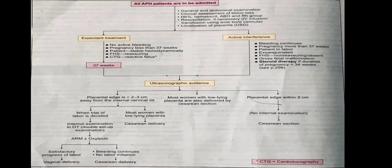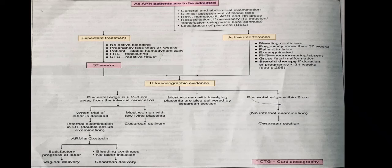Active interference is indicated when the criteria for expectant management are not met: bleeding is still continuing, pregnancy is already more than 37 weeks, labor has started, fetal heart rate is non-reassuring or absent indicating fetal distress, or there is fetal malformation. Give steroid therapy if duration of pregnancy is less than 34 weeks. Get an USG and check the placental edge distance from the internal os — if more than 2 to 3 cm away, conduct a trial of labor in the OT with artificial rupture of membranes and oxytocin drip.